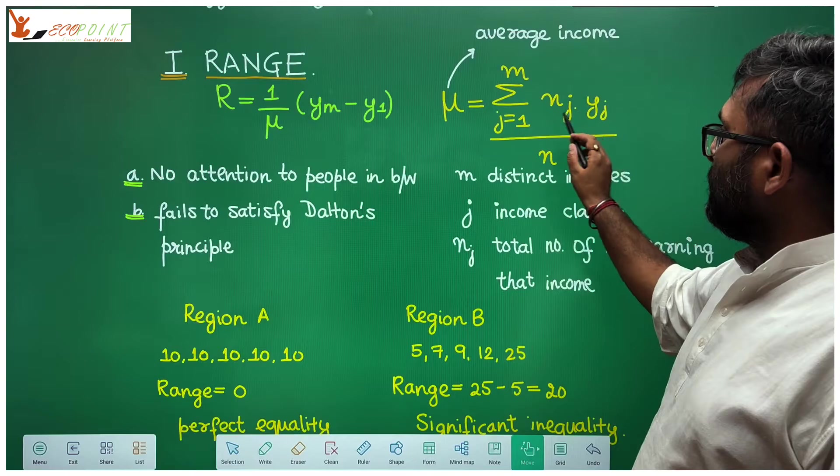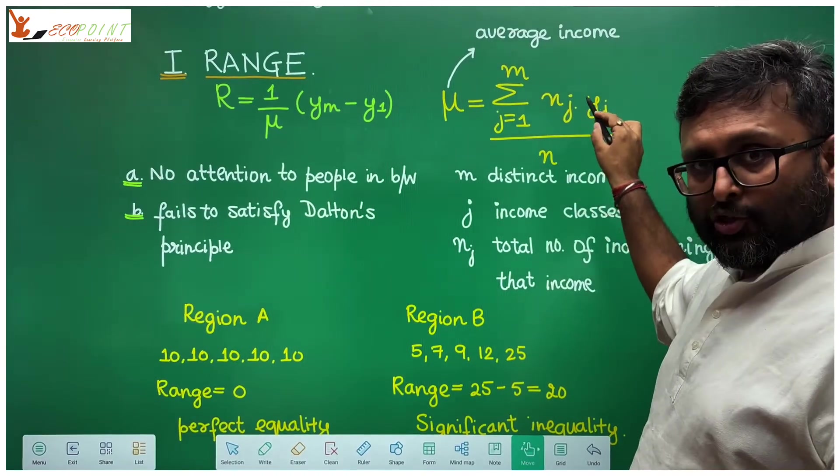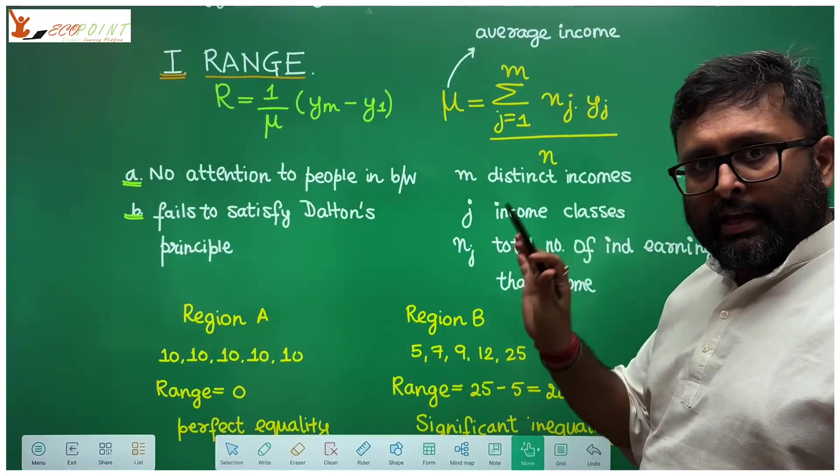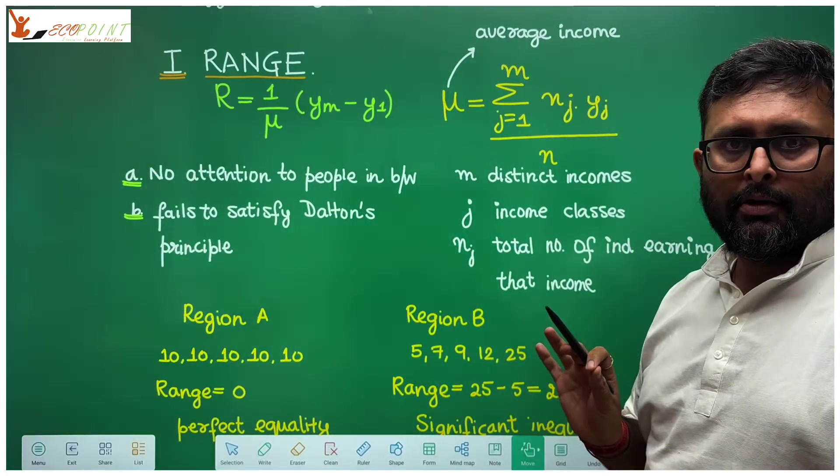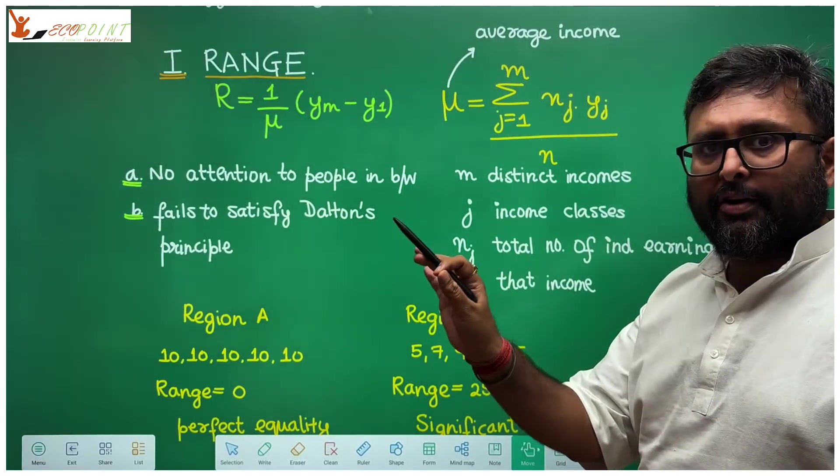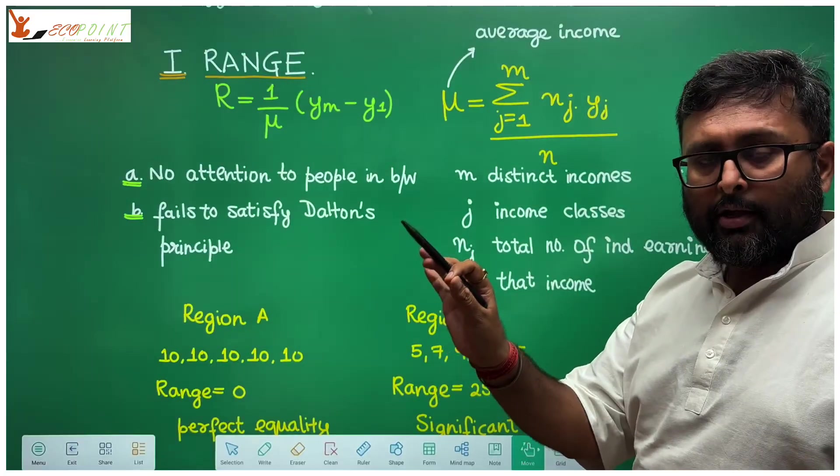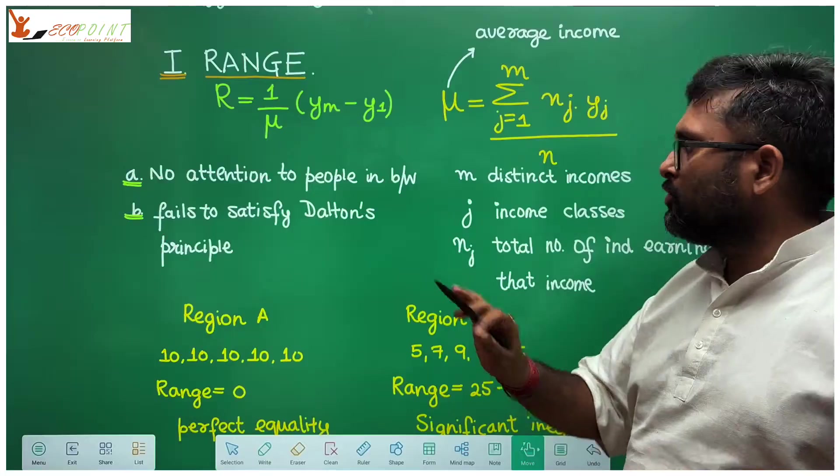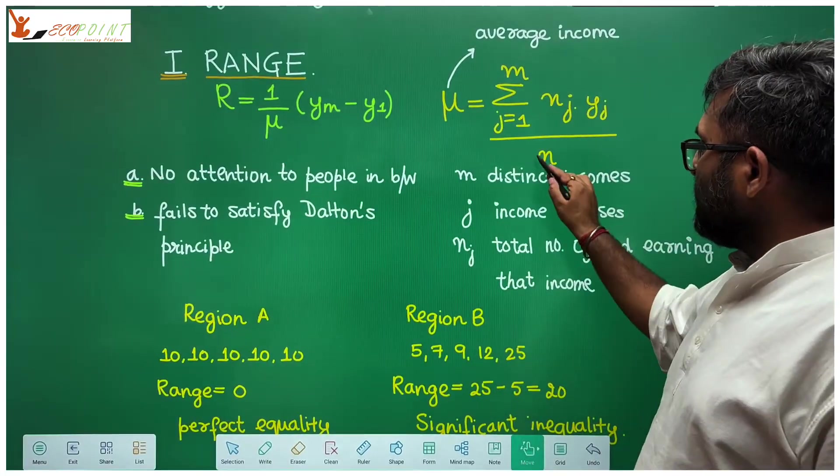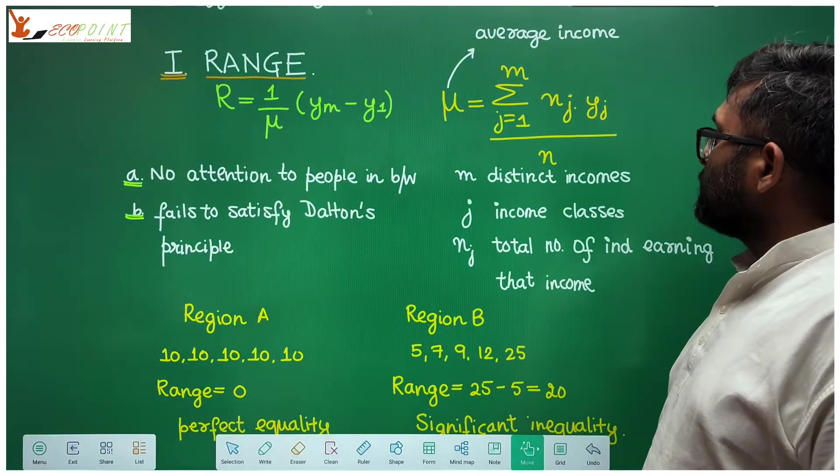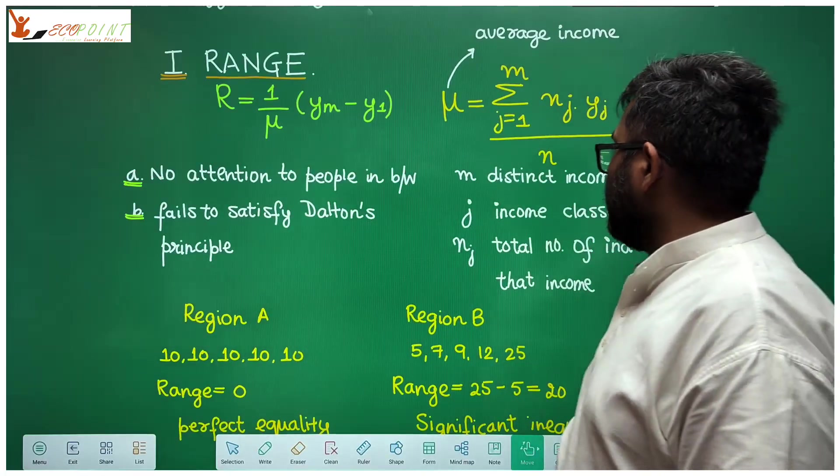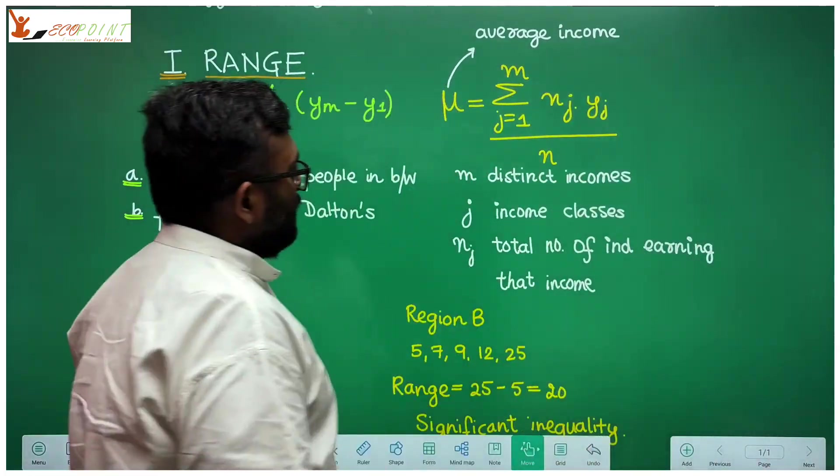This is going to give you the total income. Number of individuals in a particular class into income which they earn in that class. So 10 individuals earning 500, that is 10 into 500, 20 individuals earning 1000, that is 20 into 1000 and so on. You add all of them upon the number of individuals. What you get is average income, mu.